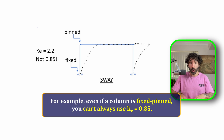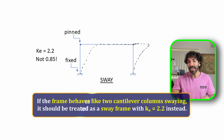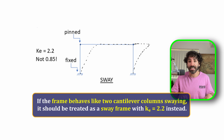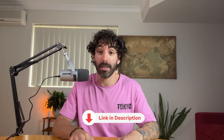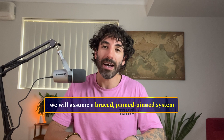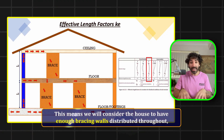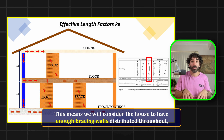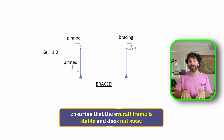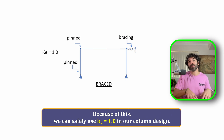For example, even if a column is fixed-pinned, you can't always use KE = 0.85. If the frame behaves like two cantilever columns swaying, it should be treated as a sway frame with KE = 2.2 instead. In our residential course project, we assume a braced pin-pin system, meaning the house has enough bracing walls distributed throughout to ensure the frame is stable and does not sway. Because of this, we can safely use KE = 1 in our column design.